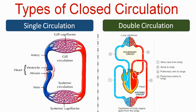The systemic circuit is the flow of blood from the heart to body organs and from body organs back to the heart. Oxygenated blood is carried to body organs, which then deoxygenate it.